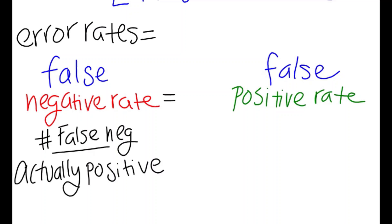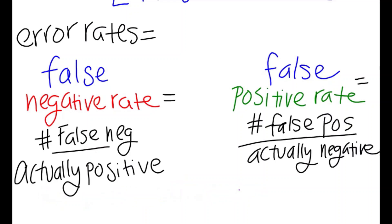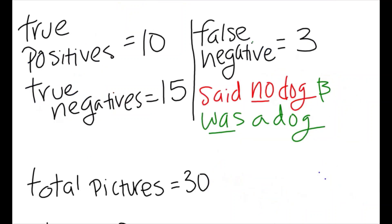To find the false negative rate, we divide the total number of false negatives by the amount of things that were actually positive, which includes our false negatives and true positives. To find the false positive rate, we divide the total number of false positives by the amount of things that were actually negative, which includes our false positives and true negatives.